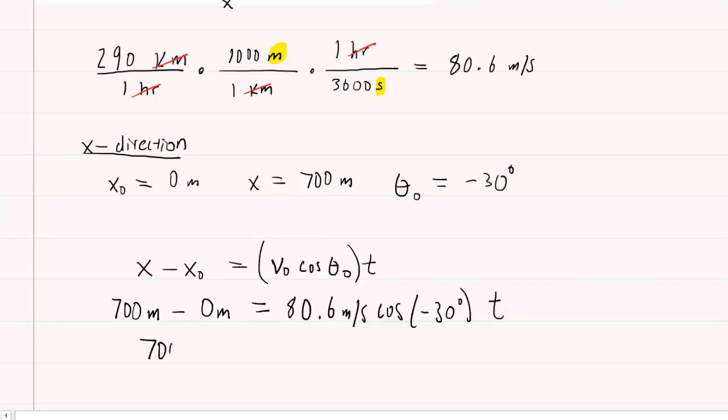Now the left side obviously becomes 700 meters. You would pick up your calculator and type in 80.6 times the cosine of negative 30 degrees. And you end up with about 69.76 meters per second, and that quantity is multiplied by the time.